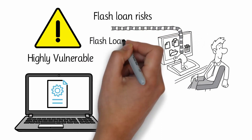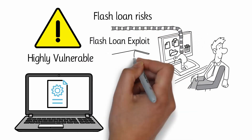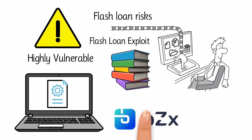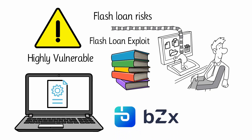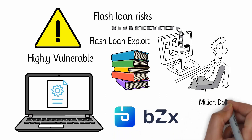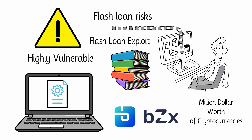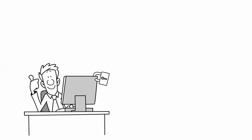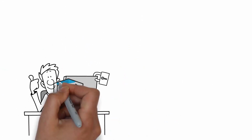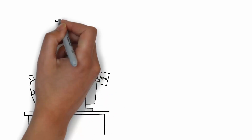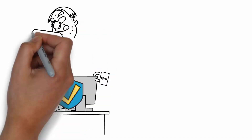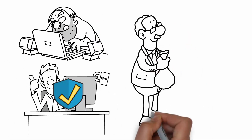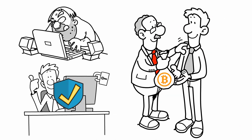We refer to this event as a flash loan exploit, and there are more than enough of them to write an entire history book. The BZX protocol was the first DeFi platform to suffer from such a hack, losing almost a million dollars worth of cryptocurrencies. This is such a gigantic issue in the blockchain industry that developers have created special platforms that enable users to insure their assets. If a decentralized exchange suffers from an exploit and does not manage to retrieve the stolen assets, the other platform will reimburse those who have insured their funds on time.